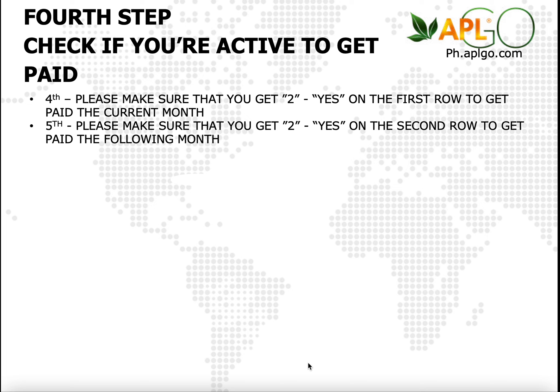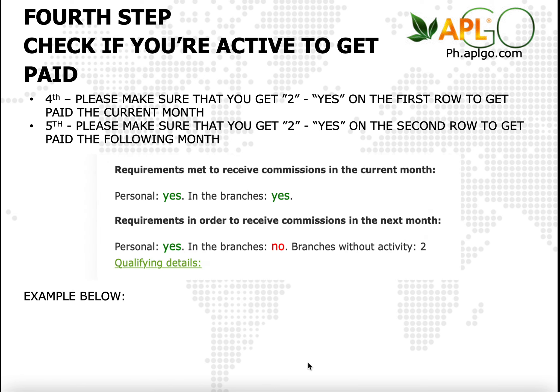Fifth step: you also need to make sure that you get two yeses on the second row to get paid the following month. Let's further elaborate — I do have a very good example for everyone.